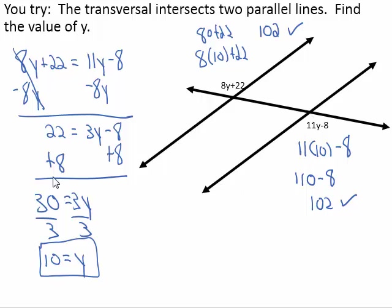For this one, the two angles are congruent because they are alternate exterior angles, and alternate exterior angles are congruent. So I got 8y plus 22 equals 11y minus 8. I decided to subtract 8y from both sides, since 8y was the smaller amount of y's. Then I added 8 to both sides and divided both sides by 3 to get y is equal to 10. When I substituted 10 back into both angles, both measures were exactly the same, confirming the two angles are congruent and y equals 10 is the correct solution.